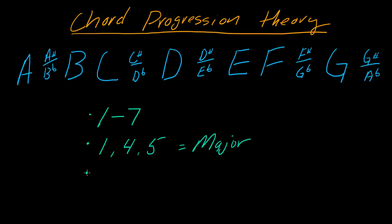Chords two, three, and six are by default minor chords. So since these are the defaults, when you see one, four, five as a chord, those are going to be major chords. Two, three, six are going to be minor chords.